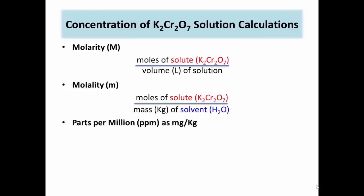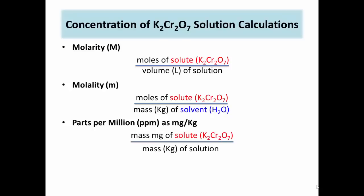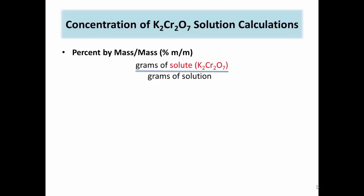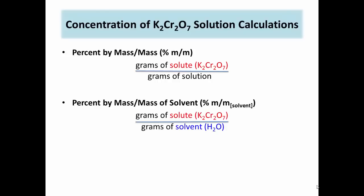Parts per million is defined as parts of solute per one million parts of solution. To calculate, divide the mass of potassium dichromate in milligrams by kilograms of solution. There are multiple percent by mass calculations. Percent by mass over mass is the ratio of grams of solute to grams of total solution. Percent by mass over mass of solute is the ratio of grams of solute to grams of solvent. They are calculated by dividing the mass of the solute by the mass of the solution or the mass of the solvent, respectively, as shown.